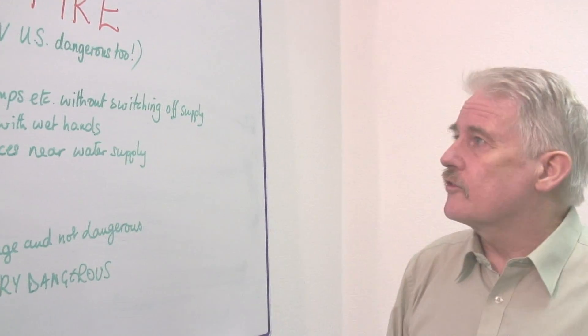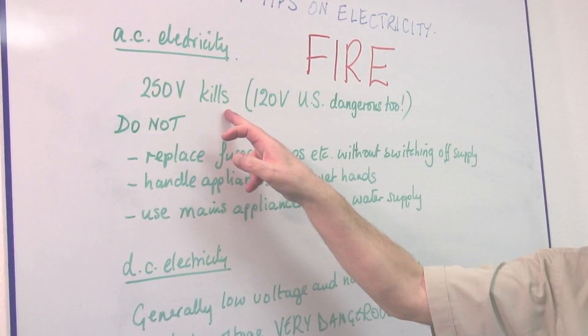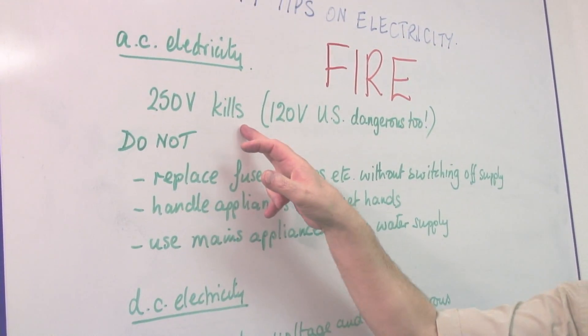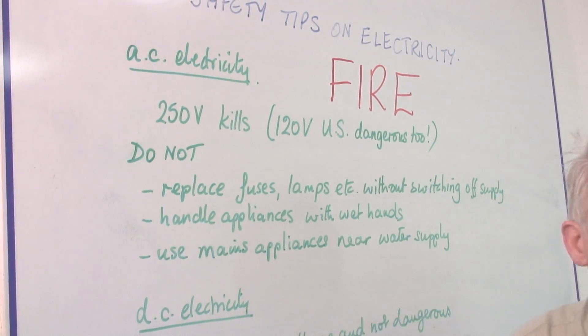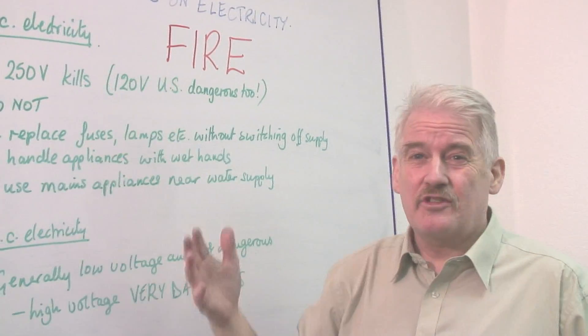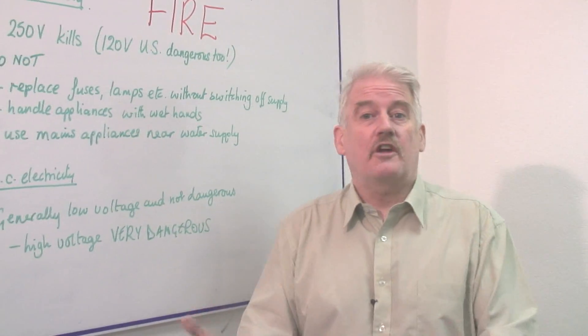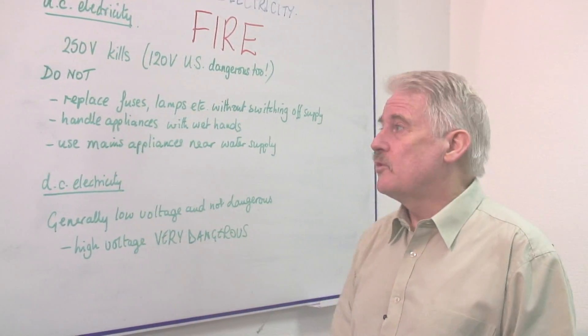There are certain things we know: 250-volt electricity kills if you get a shock. But generally, a lot of people get shocks off electricity and survive. The reason is AC electricity actually gives you a chance to let go of the thing that you've touched, and that means you will survive.